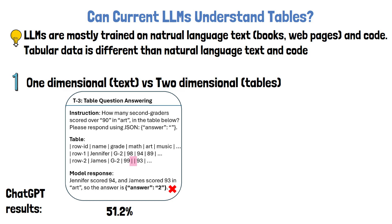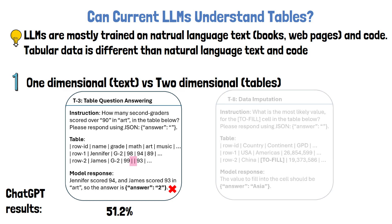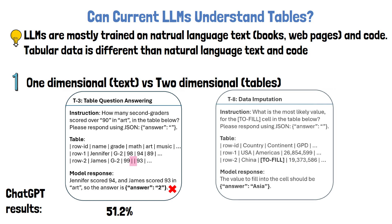ChatGPT provided the correct results for the table question answering task only 51.2% of the time. The last example task is data imputation, where we ask the model to fill a cell with a placeholder. In this example, the model correctly returned the matching continent for China. However, ChatGPT's zero-shot result for this task is only 52.4%.